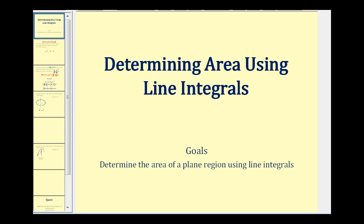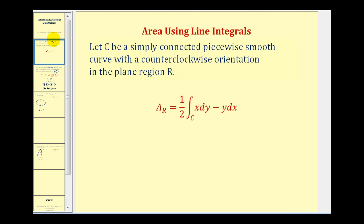Welcome to a lesson on determining area using line integrals. If C is a simply connected piecewise smooth curve with a counterclockwise orientation in the plane region R, then the area of the region bounded by the curve is equal to one-half times the line integral of x dy minus y dx along curve C.